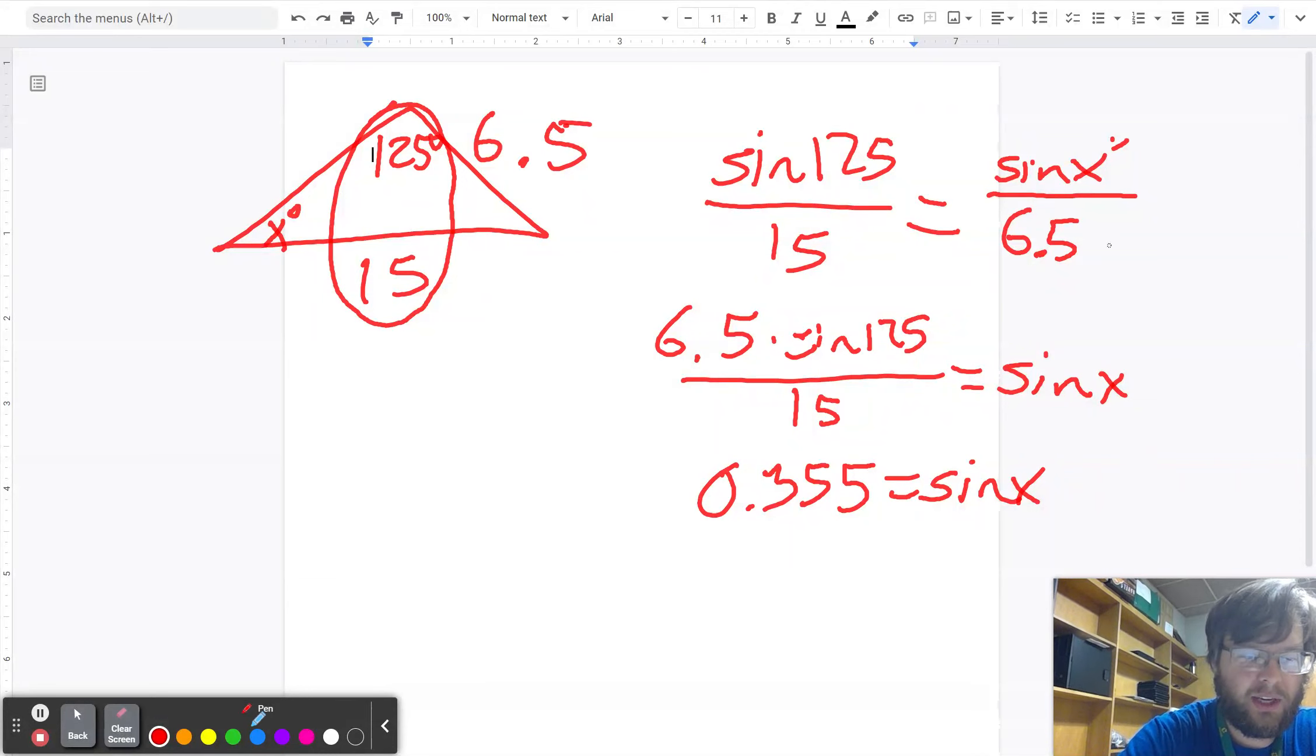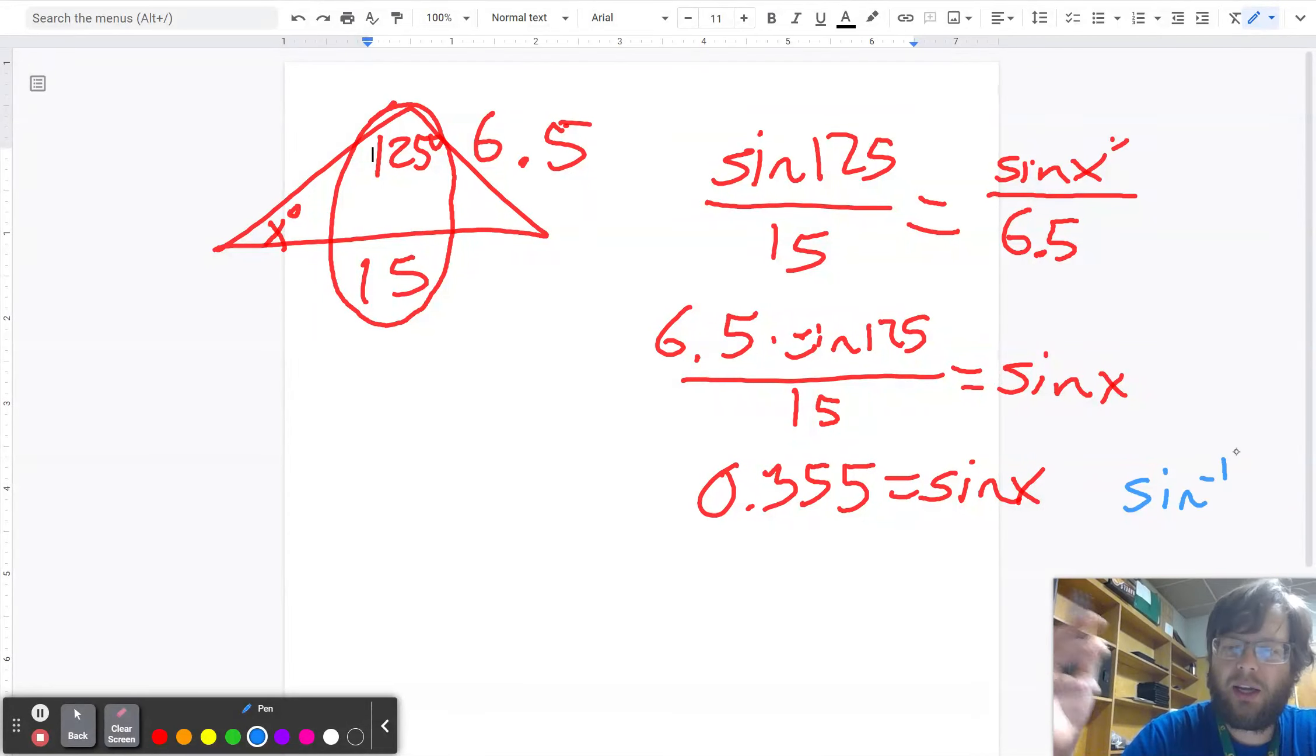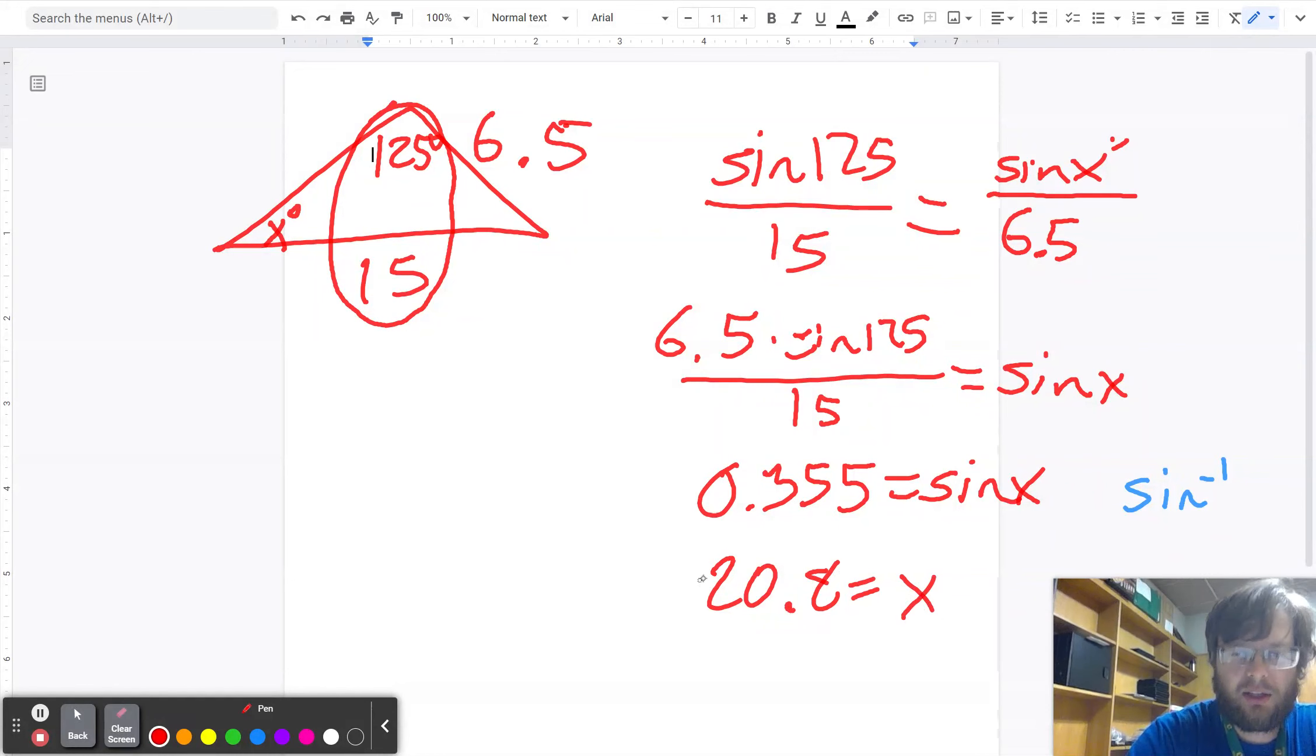If you look on your calculator, there's a little blue sine with a negative 1 on it. It looks kind of like this right underneath the sine button. It says sine negative 1. And that's what you do to undo an angle like this, to undo a sine problem. And it's going to come out to three significant figures to be 20.8 degrees is your X value.